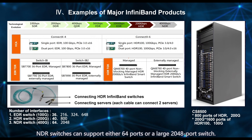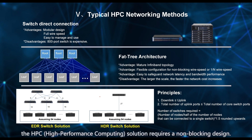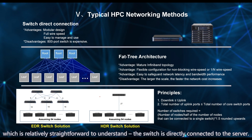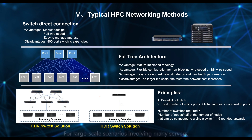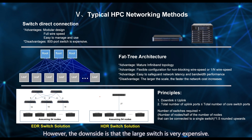After introducing the products, let's examine the network configuration. Unlike standard Ethernet switches which are blocking, the HPC high-performance computing solution requires a non-blocking design. There are two typical networking methods in the HPC solution. One is the direct connection, which is relatively straightforward: the switch is directly connected to the server. For large-scale scenarios involving many servers, we can connect them directly through a large switch or connect the large switch to smaller switches, which in turn connect to the servers. This modular design is characterized by convenient management. However, the downside is that the large switch is very expensive.